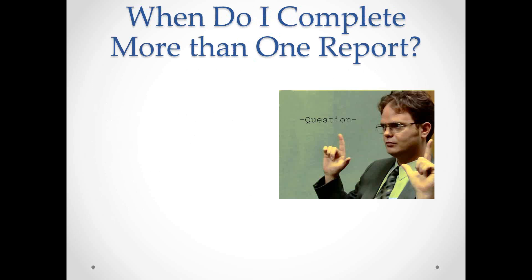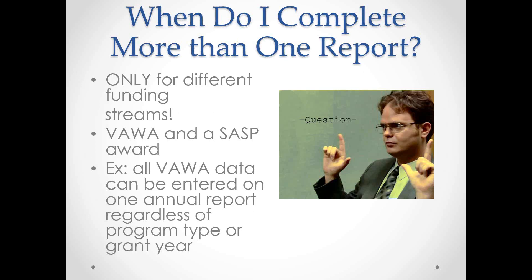When do you complete more than one report? You would only complete a different reporting form if you have different funding streams, such as a VAWA and a SAS award. If your agency has two VAWA grants, all the VAWA data can be entered on one annual report, regardless of the program type or grant year.